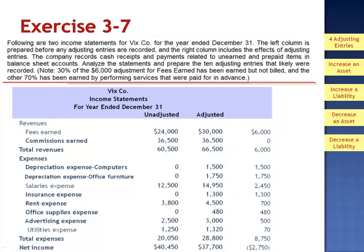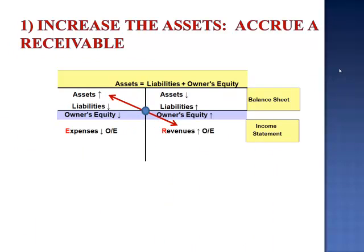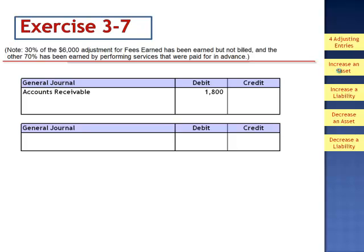Starting at the top — fees earned. The unadjusted balance was $24,000 and the adjusted balance is $30,000, so we increased revenues by $6,000. We're told that 30% of the $6,000 adjustment has been earned but not billed, so this is an accrual. We're going to be increasing the asset accounts receivable — debiting an asset and crediting a revenue. That journal entry is a debit to accounts receivable for $1,800 (30% of $6,000) and a credit to fees earned for $1,800.